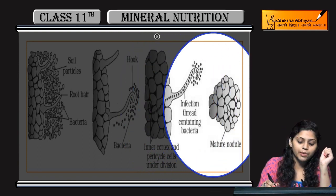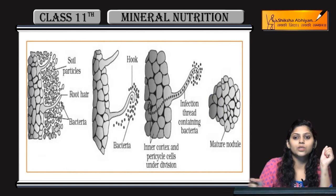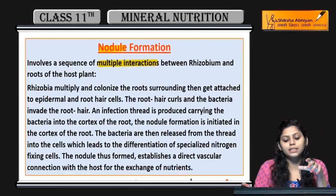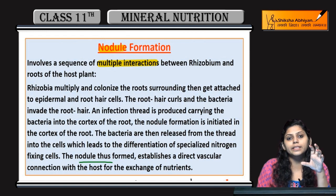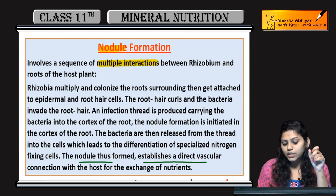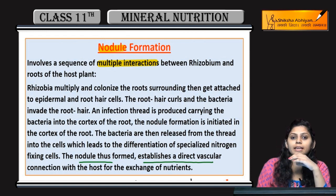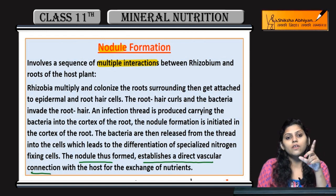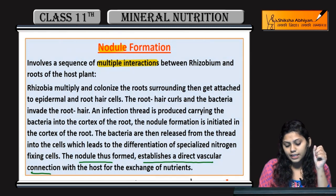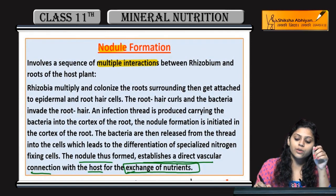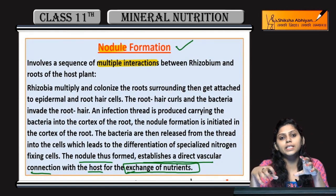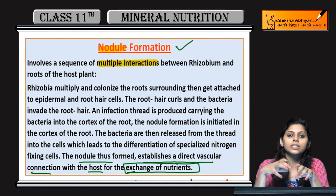Root nodules mature हो जाती है, ऐसे बनती है roots. Nodules जो बनती है, establish करती है direct vascular connection with the host ताकि exchange हो सके nutrients का. ऐसे होती है nodule की formation जब bacteria rhizobium surround करता है root को.